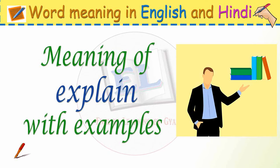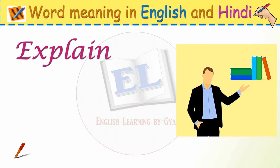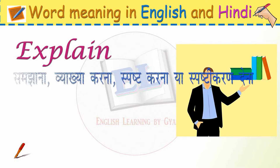Hi guys, welcome to our channel English Learning. In today's video we will learn the meaning of 'explain' in English and Hindi with example sentences. Explain meaning in English is: make something clear or easy to understand, or give a reason for something. Explain meaning in Hindi is: samjhana, vyakya karna, spasht karna, ya spashti karan dena.